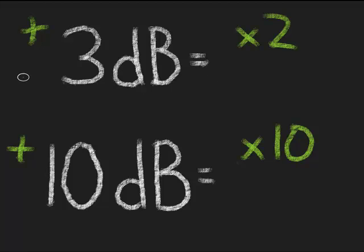And conversely, for every loss of 3 dB, you divide your transmit power by 2, where it gets cut in half. And for every loss of 10 dB, you divide your transmit power by 10.